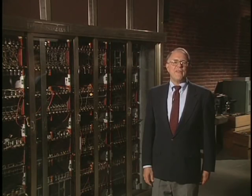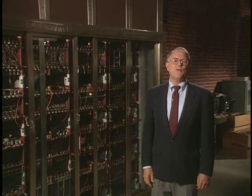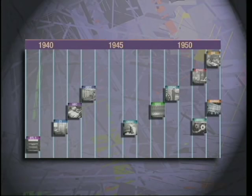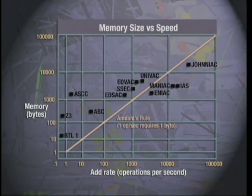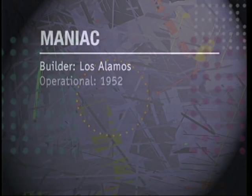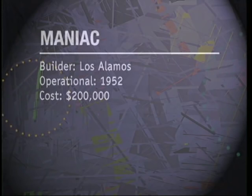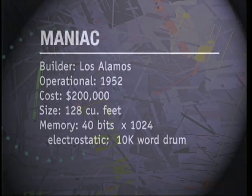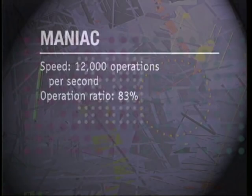Here's JOHNNIAC. It was built by the RAND Corporation to test transistor logic. It also acquired a core memory which was placed at the top of the machine. MANIAC, the Los Alamos version of the IAS, became operational in early 1952.